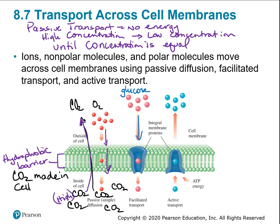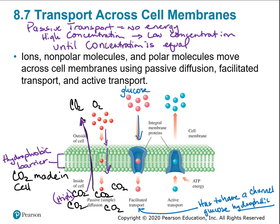This is called facilitated diffusion - it's facilitated because you have to have a channel. Glucose is polar and hydrophilic; it cannot pass through the membrane freely and must have a carrier. The phospholipids are a barrier to glucose movement, so it needs that channel. But both simple diffusion and facilitated diffusion don't require energy - no energy is needed to move gases or glucose - and both involve movement from high concentration to low concentration.